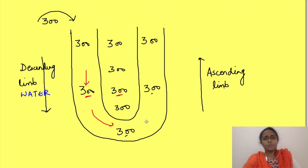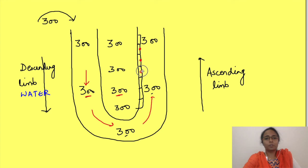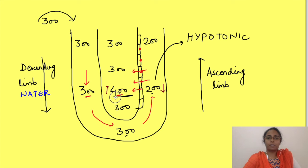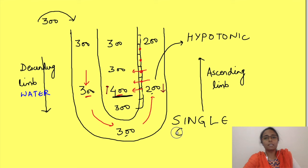As the filtrate passes through the ascending limb, the sodium-potassium-2-chloride symporter starts throwing out these ions into the interstitium via active transport. Because of this, the osmolarity of the interstitium increases and the osmolarity of fluid in the nephron decreases — so fluid in the nephron becomes hypotonic. This effect on osmolarity of medullary interstitium by a single passing of fluid is known as the single effect.